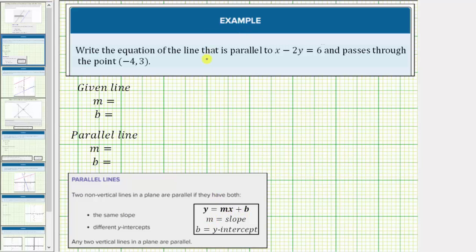Beginning with the given equation x minus 2y equals 6, we want to solve this for y. So let's isolate the y term by subtracting x on both sides. Simplifying, x minus x is zero, so we have -2y equals -x plus 6.